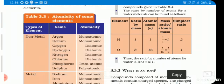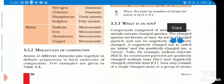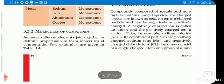What is an ion? Now we come to ions. First you should know: compounds of metals and non-metals contain charged particles, and such charged particles are called ions. So compounds composed of metal and non-metals contain charged particles. The charged particles are known as ions.